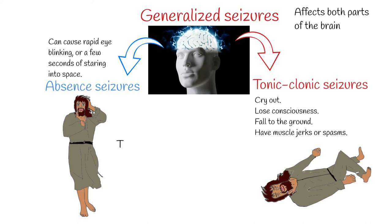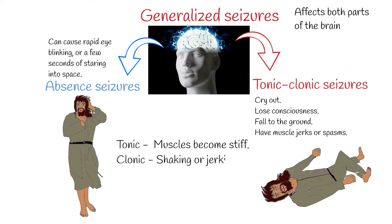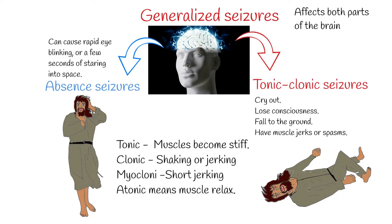Tonic means the muscles in the body become stiff. Clonic means periods of shaking or jerking parts of the body. Myoclonic means short jerking in parts of the body. And atonic means muscles relax.